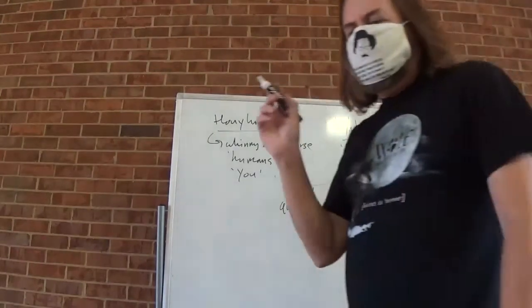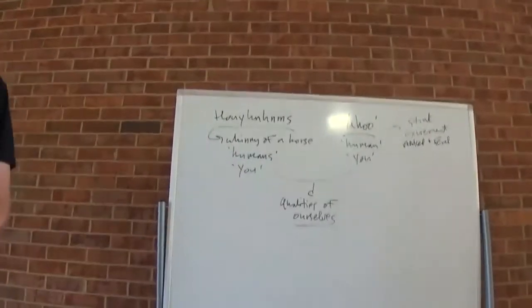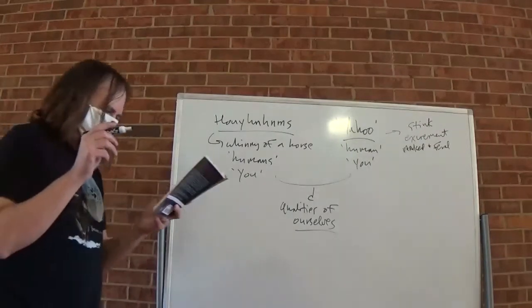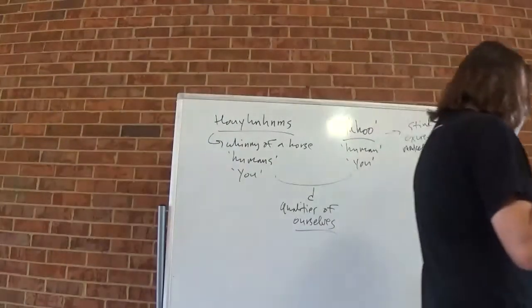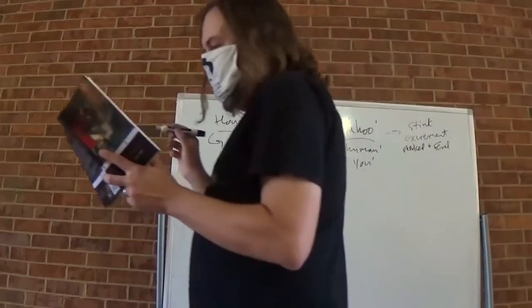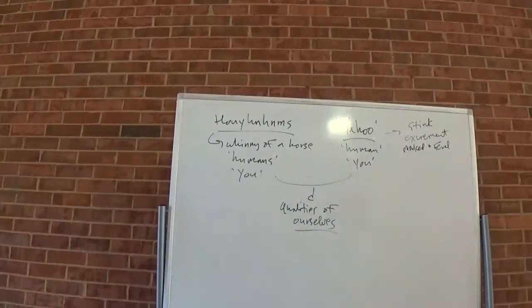Does Gulliver initially recognize any kinship with these creatures? Does he even know what they are? Let's look here at page 207. Can I get somebody to start reading for us from, 'At last I beheld several animals in a field?' Let's count near the top middle of the page.